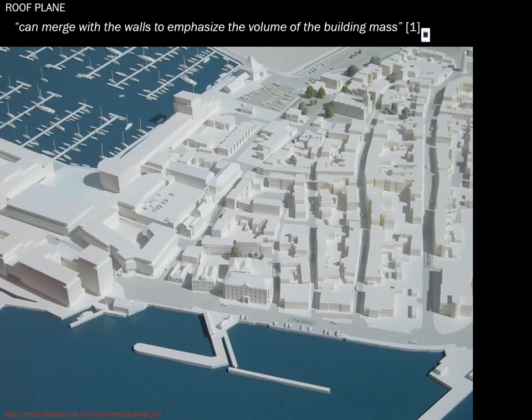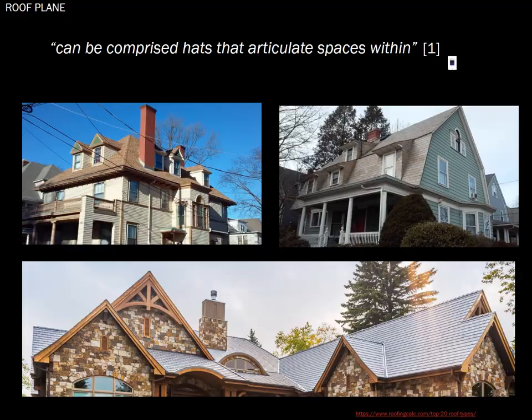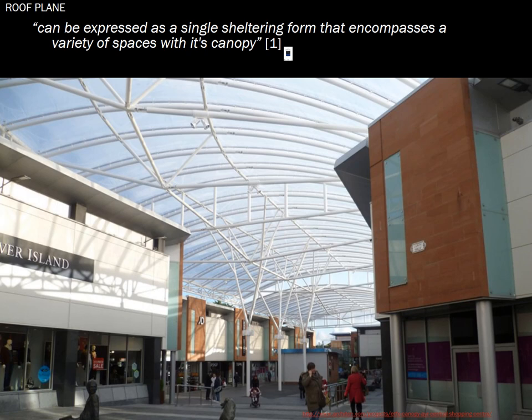A roof plane can merge with the walls to emphasize the volume of the building mass — we see this in massing models, showing the relationship between adjacent buildings and how it impacts the urban design fabric. The roof plane can be considered like a hat on the building, articulating the space underneath. It can also be a single sheltered form encompassing a variety of spaces — this is common in Japan, where an entire shopping street gets a roof overhead, effectively creating a mall within the community.